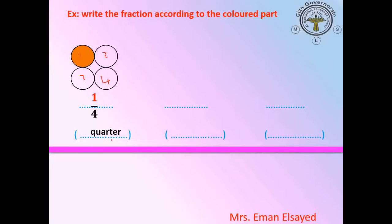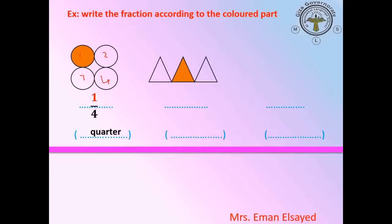Another one: we have a set of triangles. What is the fraction of the shaded part? One over three — the total parts are 1, 2, 3 — one out of three. This fraction is one third. Repeat after me: third. Very good.